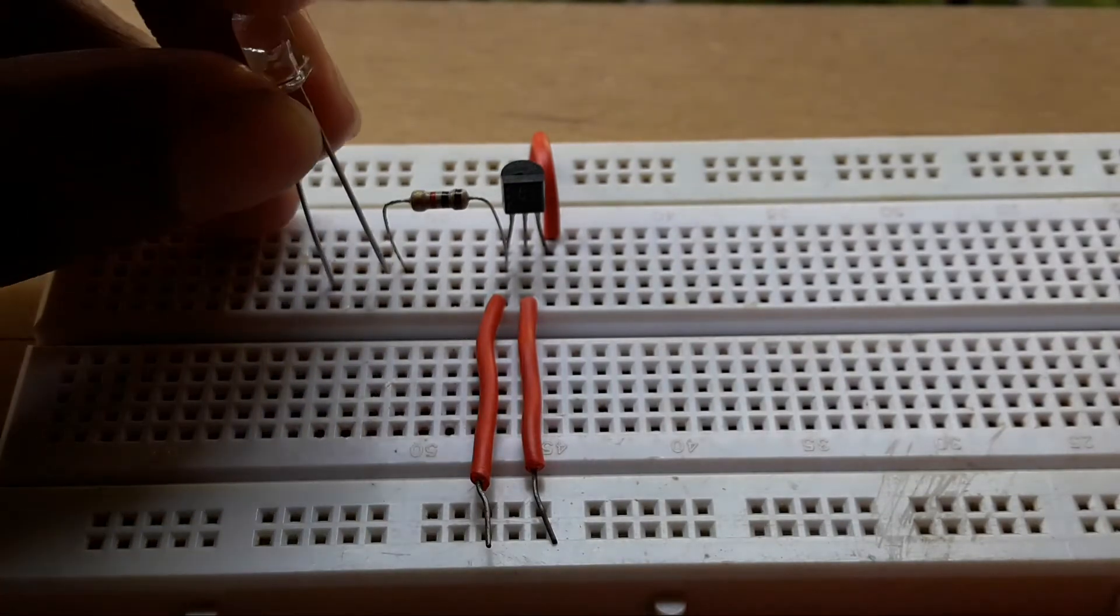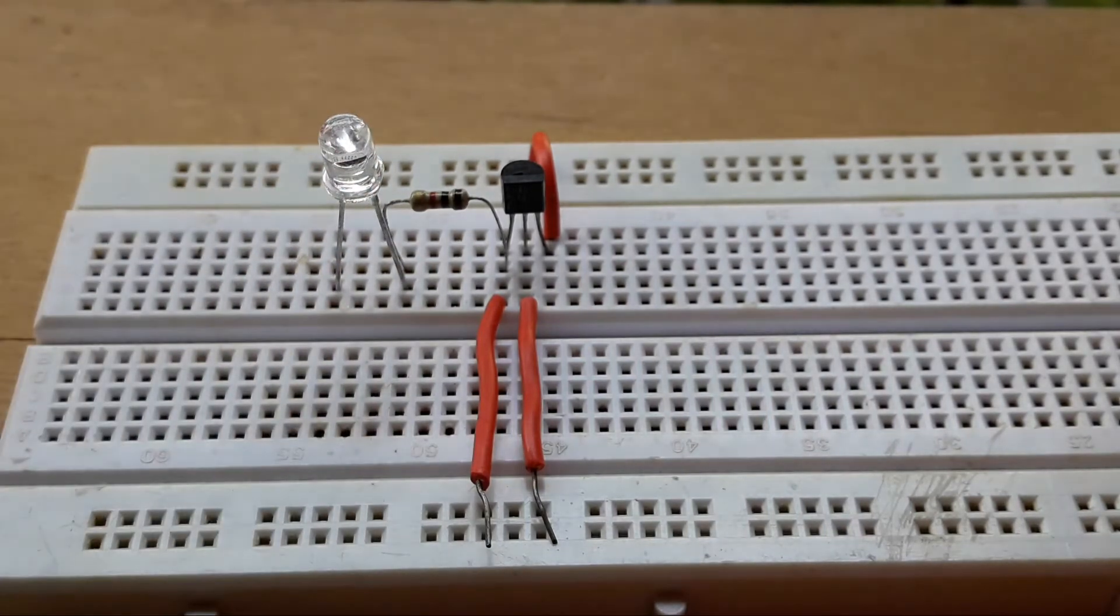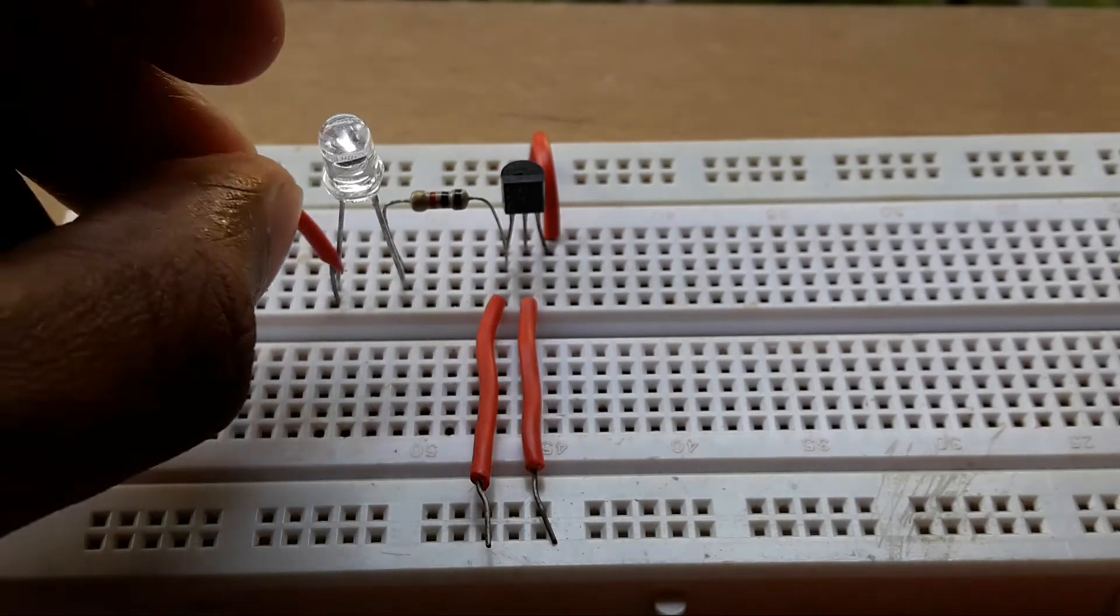Connect the cathode, that is the negative side of the LED, to the resistor and the anode of the LED, which is the positive side, will go to the positive rail of the breadboard.